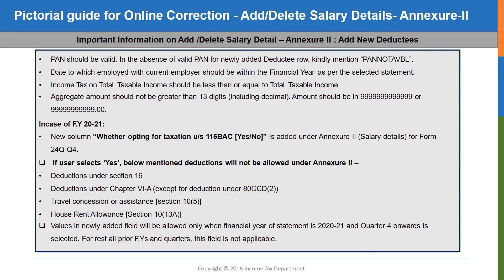The deductions not allowed when opting for Section 115BAC include: deductions under Section 16 which includes professional tax, standard deductions, etc.; all deductions under Chapter 6A except for deduction under Section 80CCD(2); travel concession or assistance mentioned in Section 10(5); and house rent elements mentioned in Section 10(13A). Values in this newly added field will be allowed only when the financial year of the statement is 2021 and quarter 4 onwards is selected. For all prior financial years and quarters, this field won't be applicable.